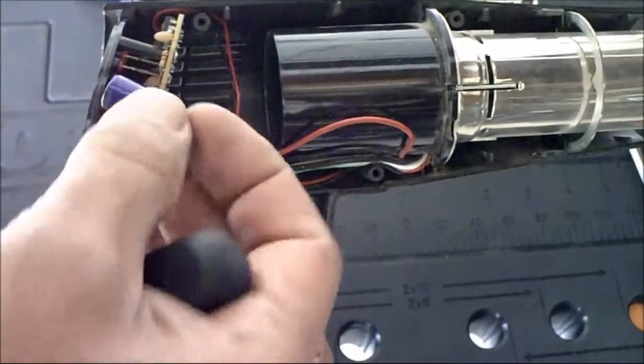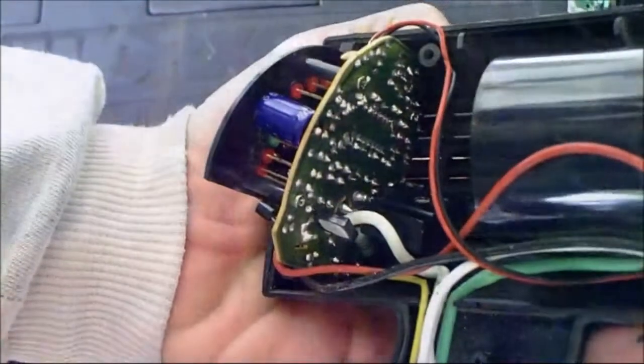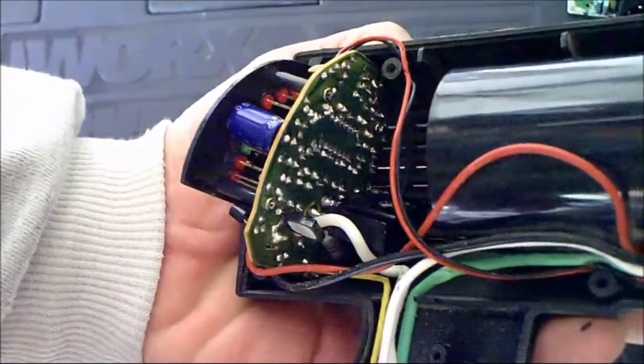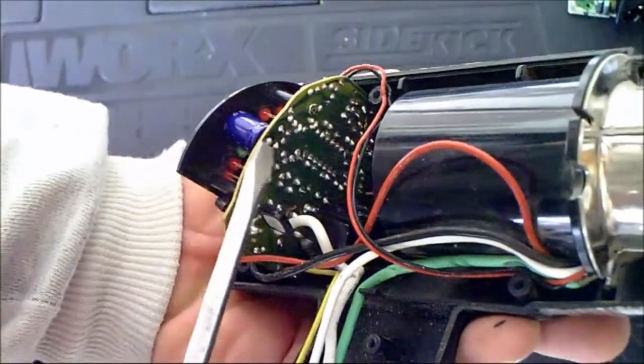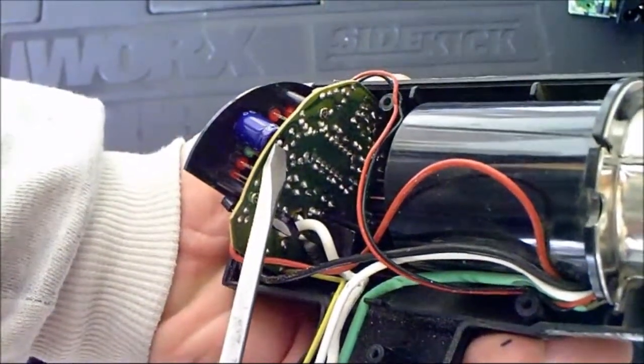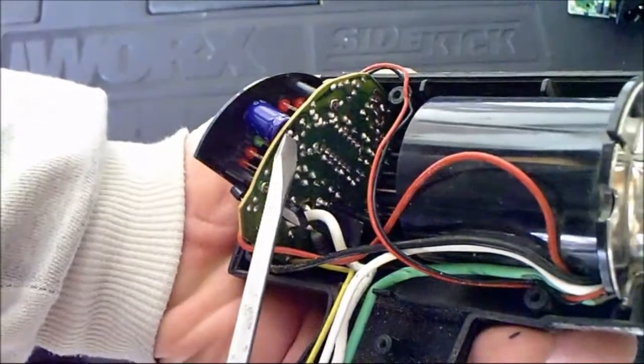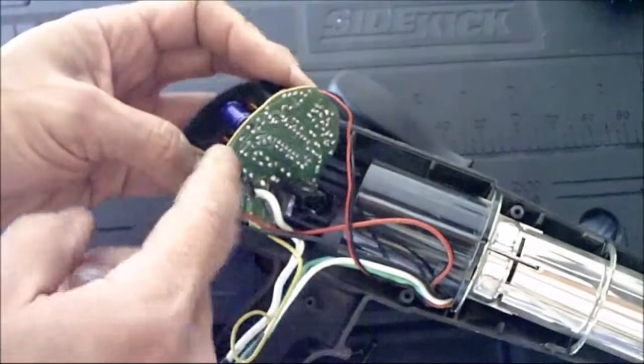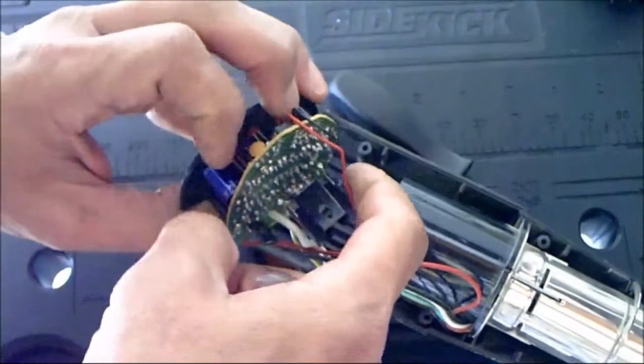The first thing you need to do is discharge the capacitor. All you need is an insulated screwdriver and touch the two leads, and what that does is take all the electricity out of the capacitor. Once that's done, take off the four screws.